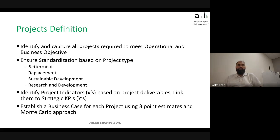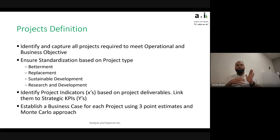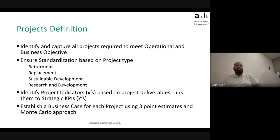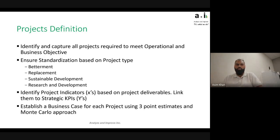Once you have that, identify project indicators based on project deliverables and link them to strategic KPIs — making sure each project shows how much of an impact it will make. If a KPI (Y) is made up of three projects, count X1, X2, and X3 to see how much gap remains, ensuring there's no overlap in gains. Establish a business case for each project using three-point estimates and a Monte Carlo approach. Using a single-point estimate means missing out on risk — if a project supposedly brings $100 million in value, you need to know the probability or certainty behind that number, whether it's an average, P80, or P20. We'd always recommend at least three-point estimates — best case, worst case, most likely — and then use Monte Carlo to produce a business case or risk definition.